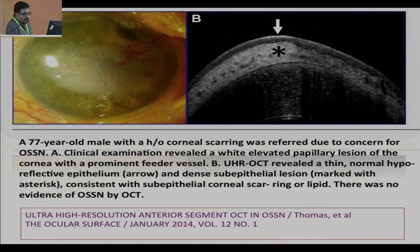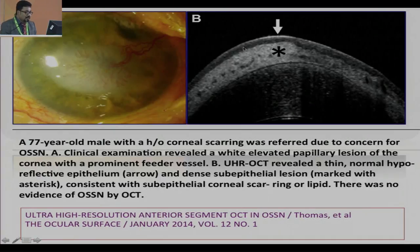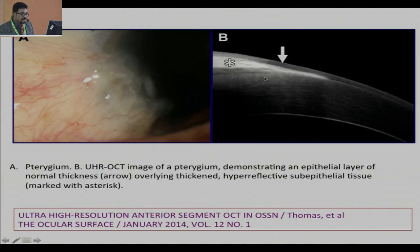In ultra-high resolution OCT: a 77-year-old male with a history of corneal scarring was referred due to concern of pterygium. Clinical examination revealed a white elevated papillary lesion of the cornea with a prominent feeder vessel. Ultra-high resolution OCT revealed a thin normal hyperreflective epithelium and a dense subepithelial lesion; the underlying cornea was perfectly healthy. This was consistent with subepithelial corneal scar, possibly a ring or lipid, and there was no evidence of pterygium. Similarly, UHR OCT in pterygium shows the epithelial layer and thick hyperreflective subepithelial tissue with the underlying cornea perfectly healthy.